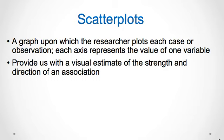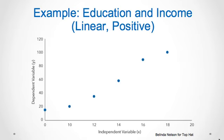Scatter plots are graphs that researchers use to plot each case or observation. Each axis represents the value of one variable. Scatter plots provide us with a visual estimate of the strength and direction of a linear relationship. Here is an example of a scatter plot for education and income. As you can see, it is linear and positive — as variable X goes up, so does variable Y.